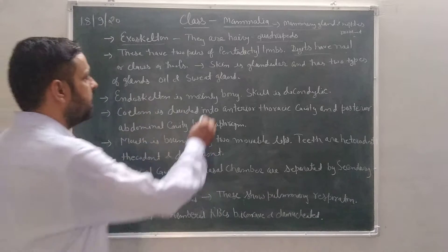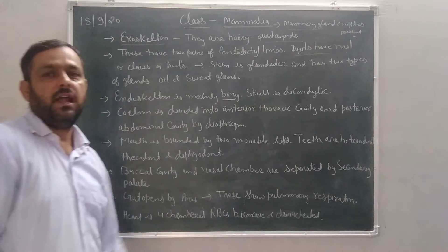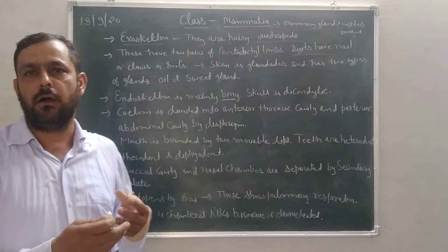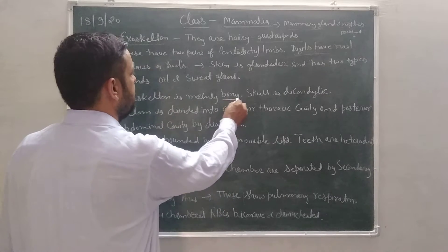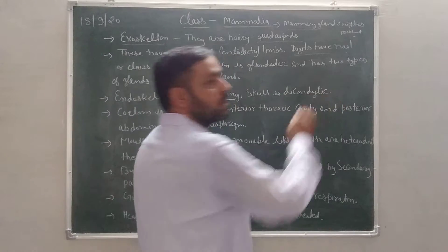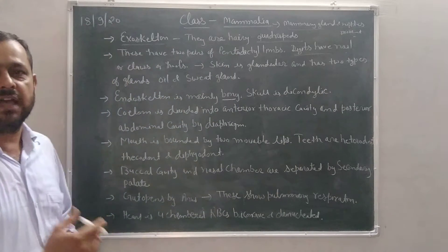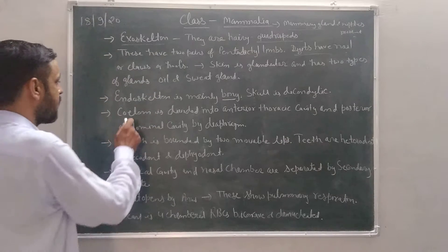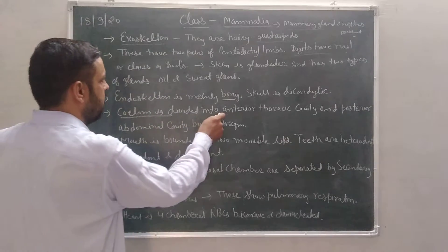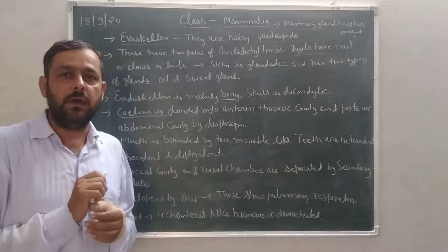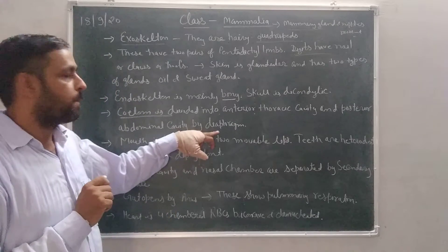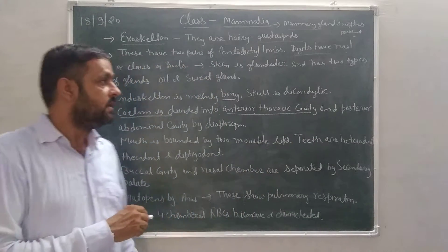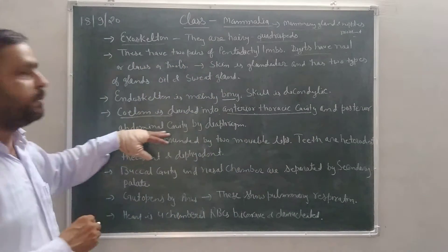Next, the endoskeleton is mainly bony, made up of bone and cartilage but with a maximum amount of bone. The skull is dicondylic, as also seen in reptiles and aves. The coelom is divided into two parts by the diaphragm: the anterior thoracic cavity and the posterior abdominal cavity.